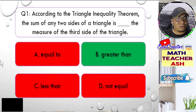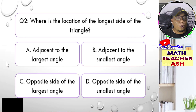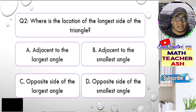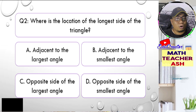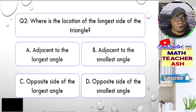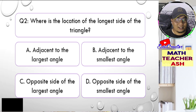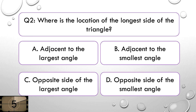Let us go to question number two. Where is the location of the longest side of the triangle? Is it A, adjacent to the largest angle; B, adjacent to the smallest angle; C, opposite side of the largest angle; or D, opposite side of the smallest angle? I'll give you five seconds to think about your answer.